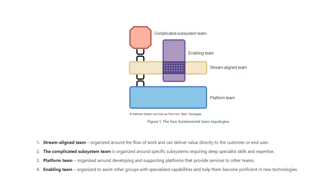Just to recollect whatever we discussed in my previous videos, there are four fundamental team topologies. First, stream-aligned teams, which are organized around the flow of the work and can deliver value directly to the customer or end user. Second, complicated subsystem teams, organized around specific subsystems requiring deep specialist skills and expertise. Third, platform teams, which develop and support platforms that provide services to other teams. Finally, enabling teams, organized to assist other groups with specialized capabilities and help them become proficient in new technologies. These are the four fundamental team topologies generally used in SAFe for organizing teams and ARTs.